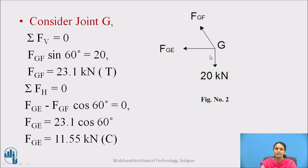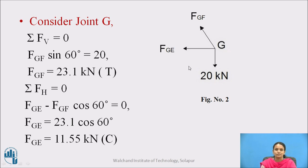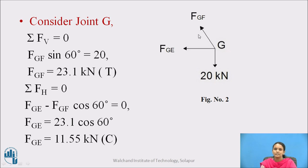In the analysis, downward forces are considered negative and upward forces are considered positive. The left side of the joint is considered positive and the right side is considered negative — this is the direction convention for horizontal forces. Using the two equilibrium conditions to analyze joint G: the summation of vertical forces equals zero. The vertical forces are the external force of 20 kN and the force in member FG, which is inclined, giving horizontal and vertical components. The vertical component of force FG is FG sin 60.